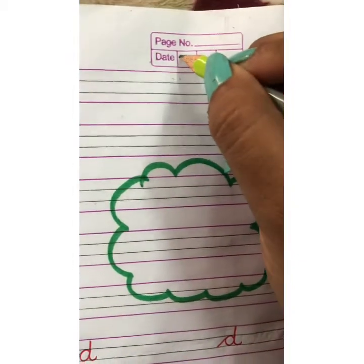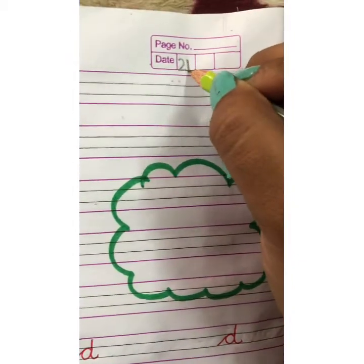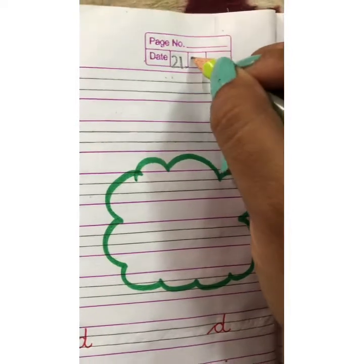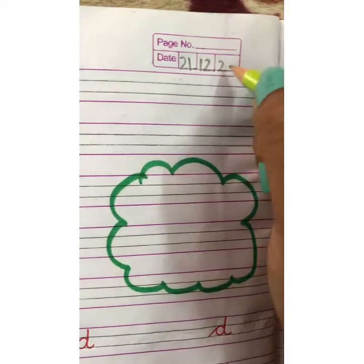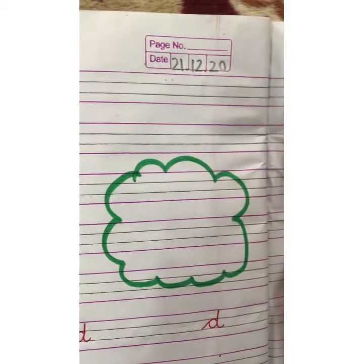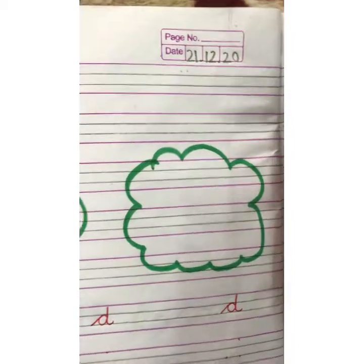What is the date today? 21-12-2020. That is 21st December 2020.